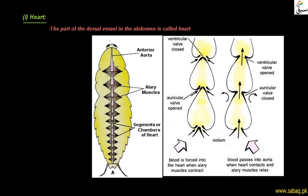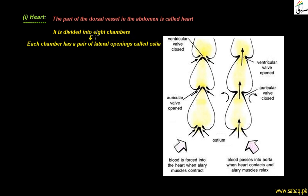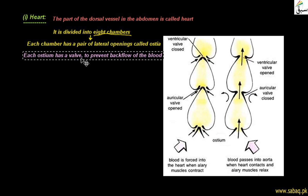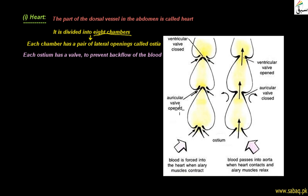If we enlarge the heart, we can see its structure more clearly. The heart is divided into eight chambers. We can see that there are lateral openings called ostia. With each ostium, there is a valve present. This valve stops backflow. There are two types of valves: the auricular valve and the ventricular valve. When the alary muscles contract, the auricular valve opens and the ventricular valve closes, pushing blood into the heart.